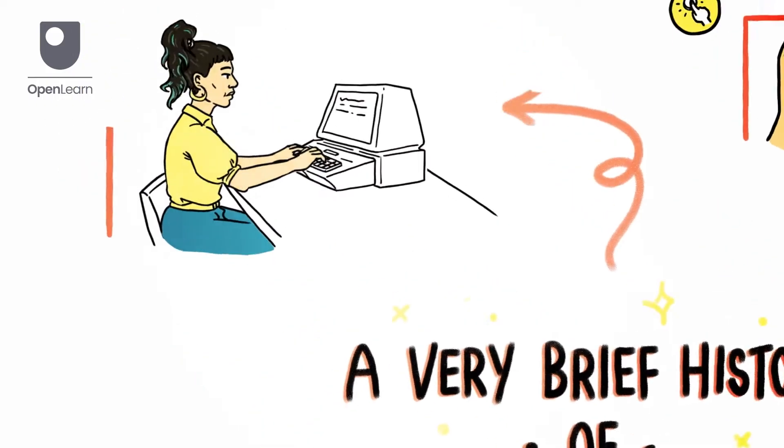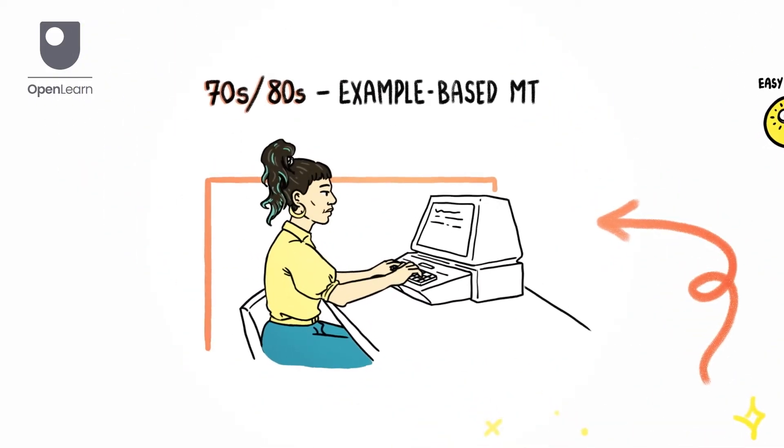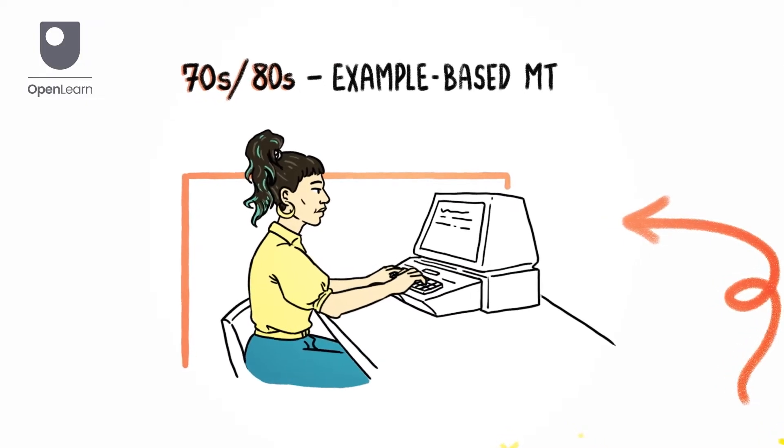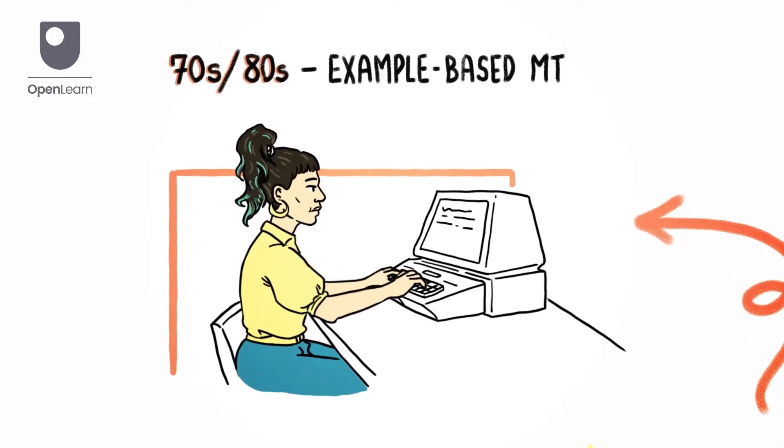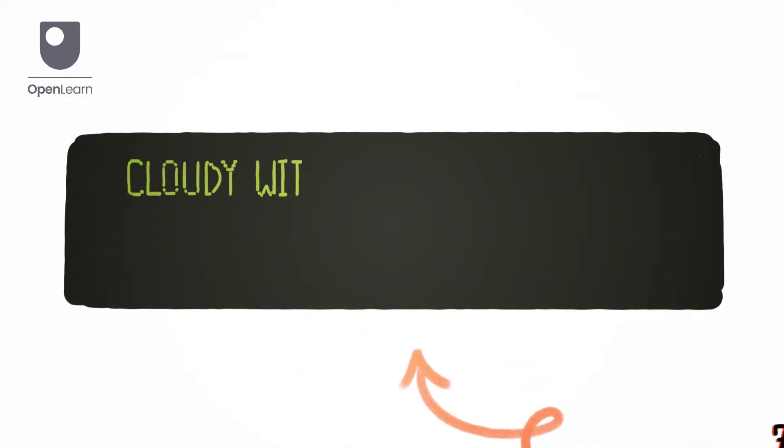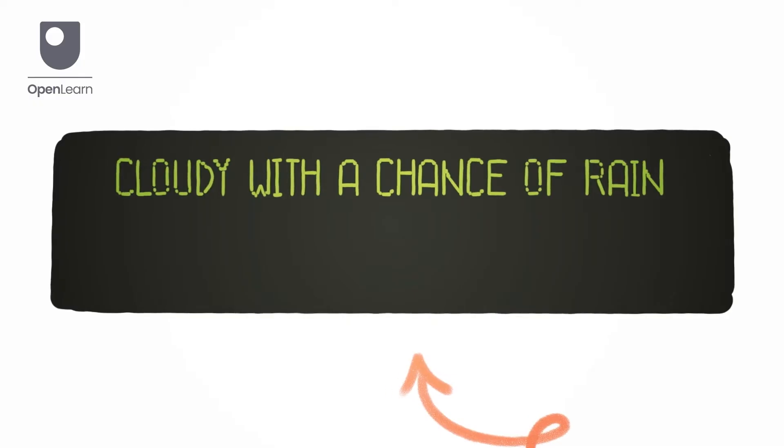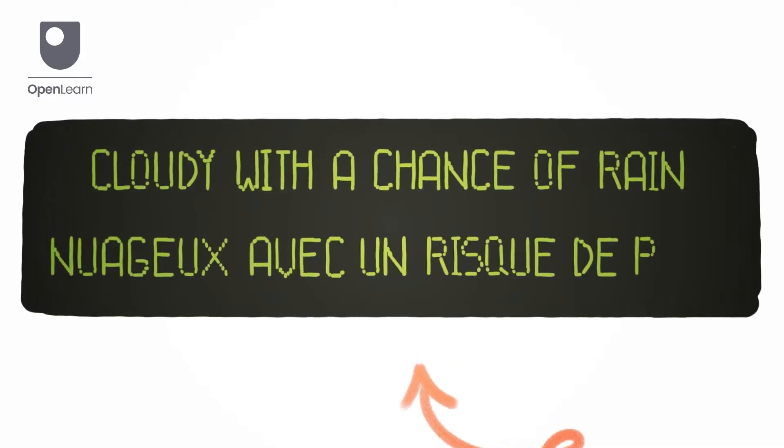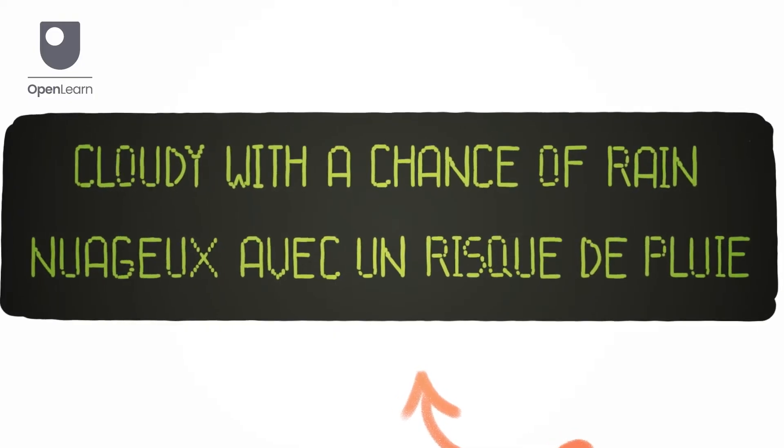In the 70s and 80s, researchers found that machines could translate repetitive texts using pre-translated sentences, a method called example-based translation. This approach had its first success translating weather forecasts between English and French in Canada, revitalizing interest and funding in the 1980s.